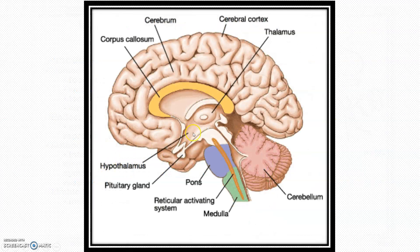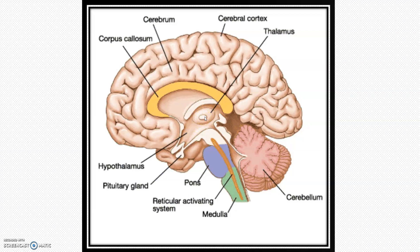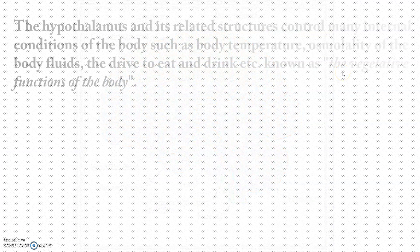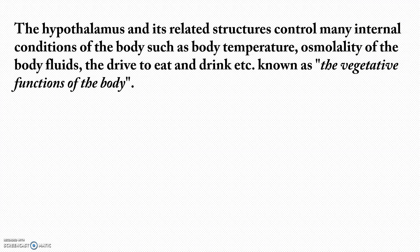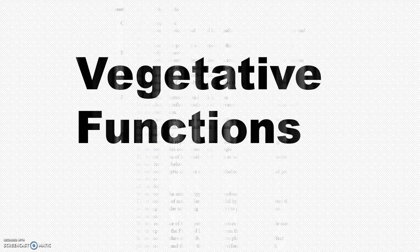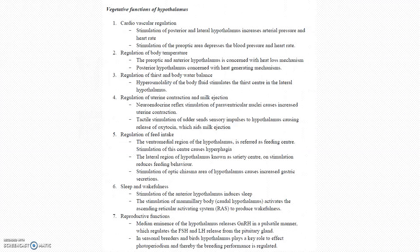This is the hypothalamus — you can see the anatomical point of view; this is the thalamus and all. The hypothalamus and its related structures control many internal conditions of the body such as body temperature, osmolality of the body fluids, the drive to eat, drink, and all. This is known as the vegetative functions of the body, and these will be controlled by the hypothalamus.